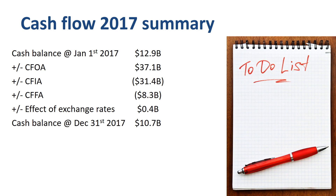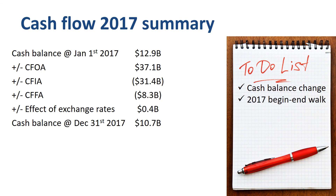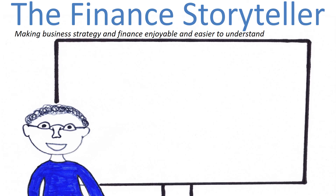We have succeeded in performing a high-level cash flow statement analysis of Alphabet Inc. by focusing on five areas: cash balance change over three years, cash balance walk for 2017, and a review of CFOA, CFIA, and CFFA. I am very interested to hear your comments — please post them below the video. Thank you for watching! If you enjoyed this explanation of how to read and analyze a cash flow statement, please give it a thumbs up, check out the suggested videos on the end screen, and subscribe to the Finance Storyteller YouTube channel.